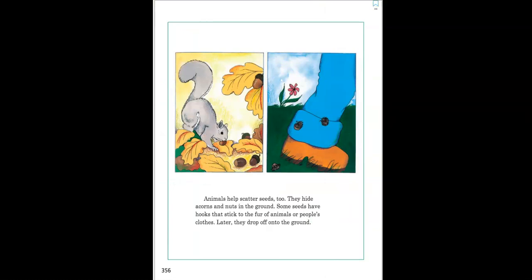Animals help scatter seeds too. They hide acorns and nuts in the ground. Some seeds have hooks that stick to the fur of animals or people's clothes. Later, they drop off onto the ground.